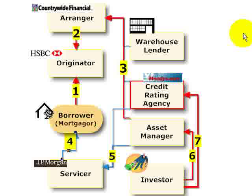There are seven frictions identified, but only five are really isolated as the real problems. There are two key themes here. One is moral hazard. The second is information asymmetry — information asymmetry is when one counterparty knows more than the other counterparty in a transaction.